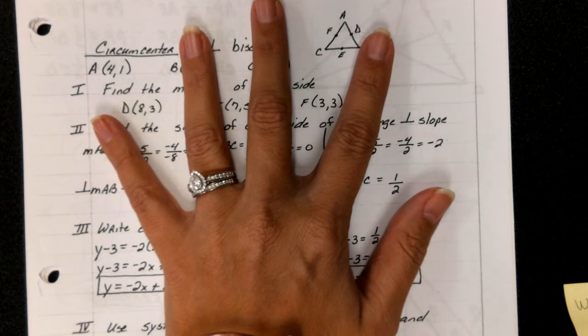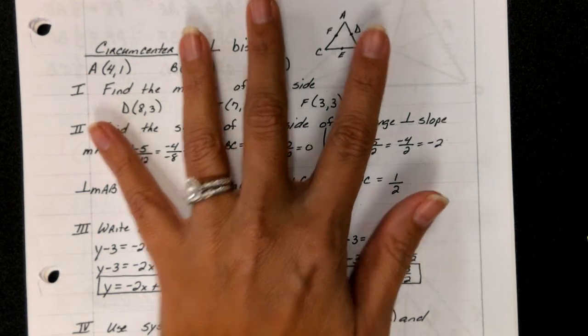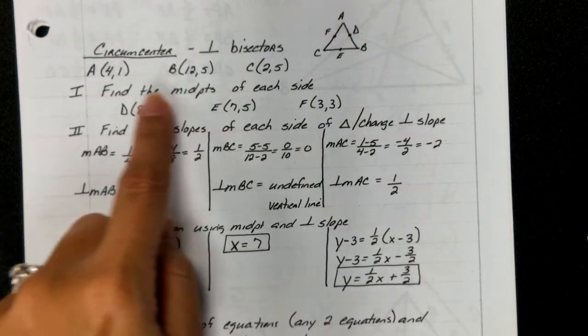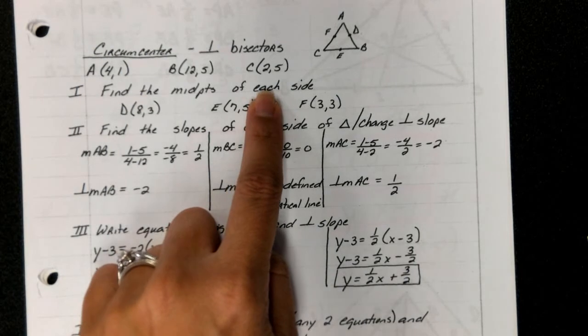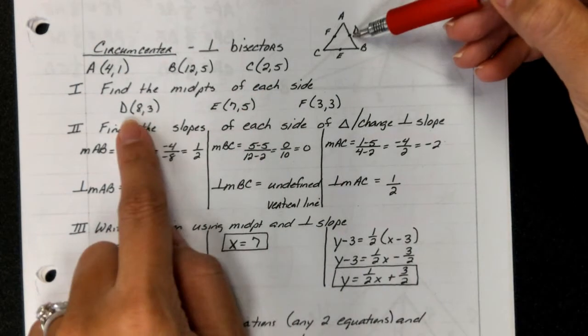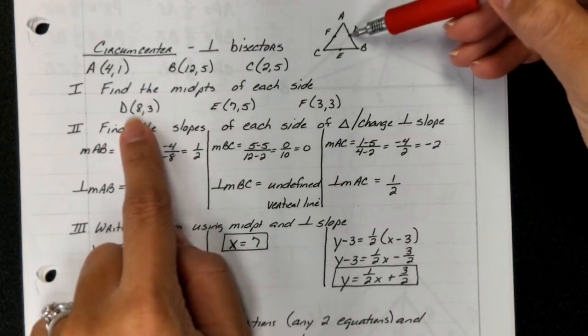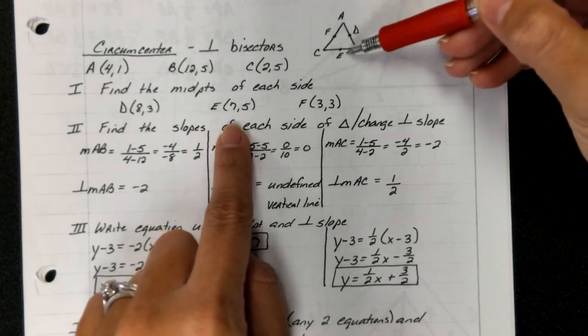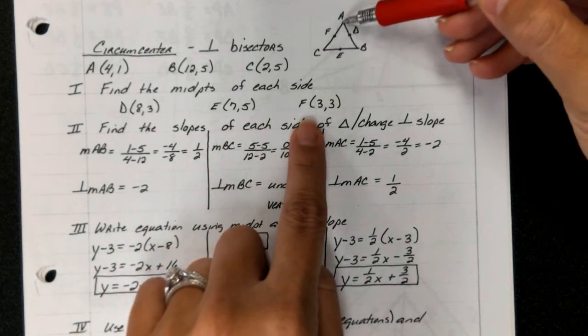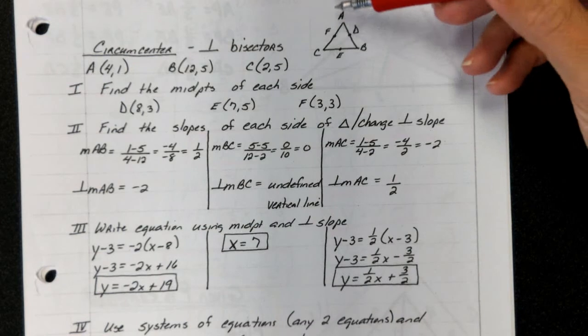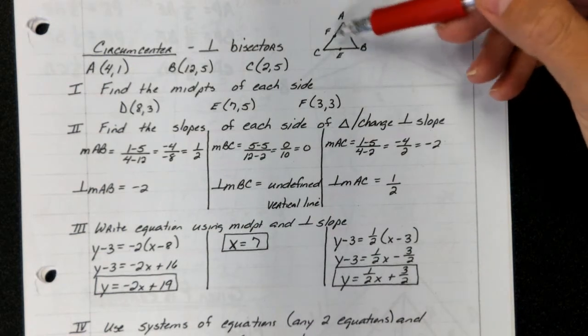These notes are also posted online for you. Your first step is going to find the midpoints of each side. So guys, what we're actually finding between A and B is point D, between B and C is point E, and between C and A is point F. That's the midpoint because we know a perpendicular bisector is going to be the midpoint of the sides.